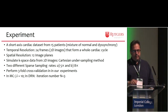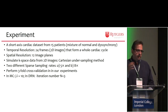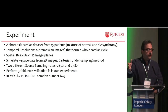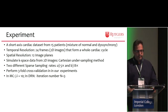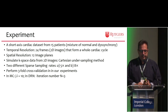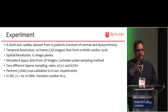In the experiments, we have a short-axis cardiac dataset with 15 patients. This is a collaboration with NYU and Cornell. The temporal resolution is 24 frames of 2D images forming a whole cardiac cycle, with special resolution in 12 image planes. We simulate the k-space from 2D images with Cartesian under-sampling methods. Two different sparse sampling rates: five times and eight times. We perform three-fold cross-validation. In the previous network, the distance between frames can be up to 10 — like 10 previous frames and 10 after — and in the B and S networks we do three iterations.